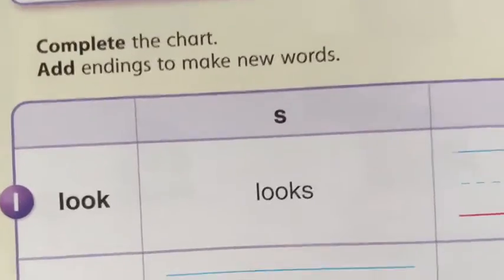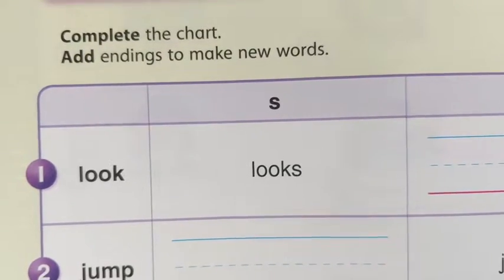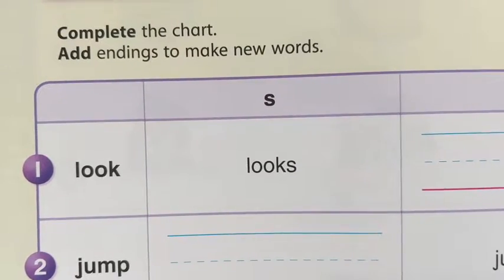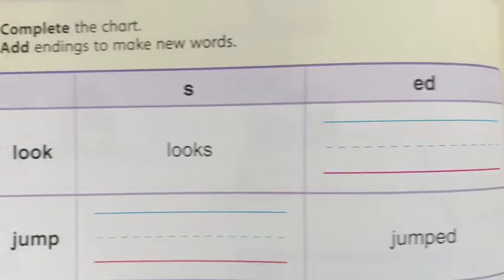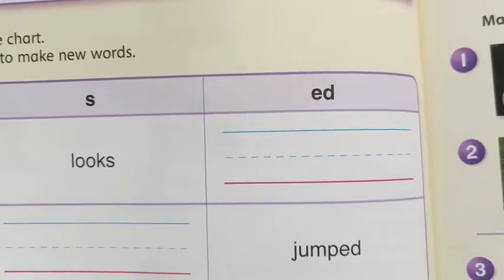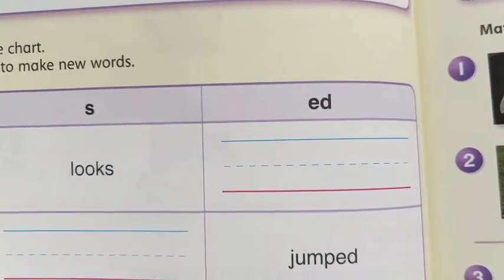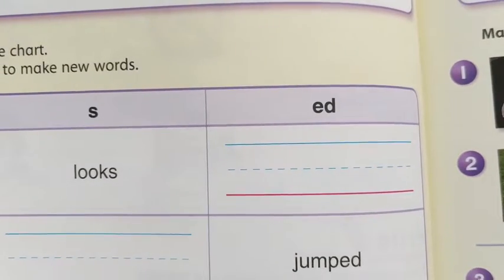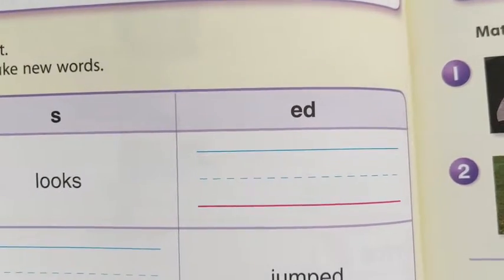So, if you add an S to the verb, you'll find out what something or someone does. But if you add an ED to the end of the verb, the word will actually tell us what someone or something did in the past.